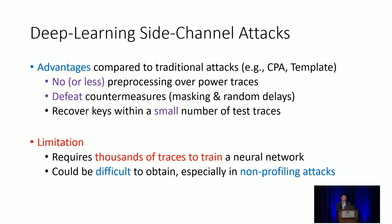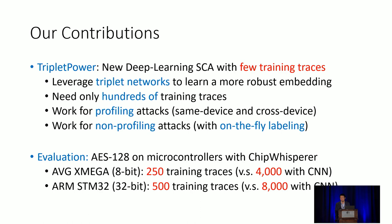One limitation of using deep learning in side-channel attacks is that in general it requires a large number of training traces to train a good model. However, in many cases this can be difficult to achieve, especially if the attacker has only a short time window to collect sufficient traces, particularly in a non-profiling attack.